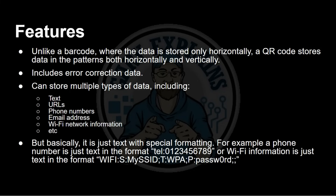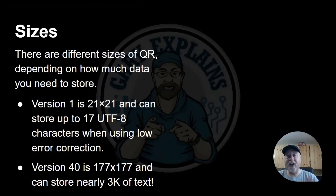A QR code can store all kinds of things: text, URLs, phone numbers, email addresses, and Wi-Fi network information. Basically it stores text. For example, a phone number is stored as the word 'tel' colon and then the number, or Wi-Fi information starts with 'WIFI:' followed by the SSID and password. QR code readers recognize text formatted in specific ways — telephone, Wi-Fi, or URLs starting with HTTP.